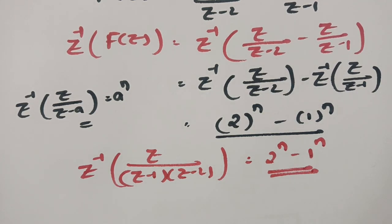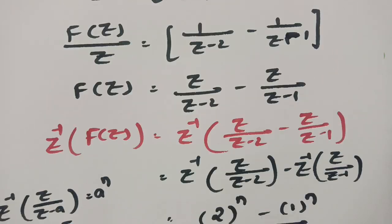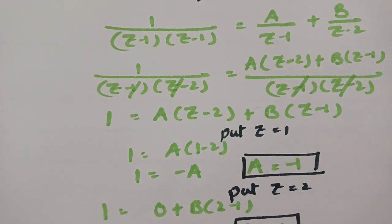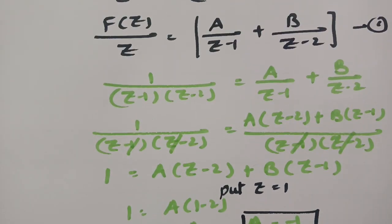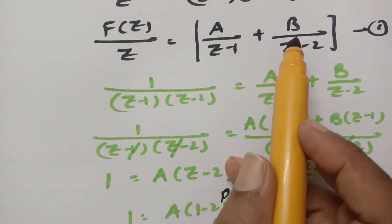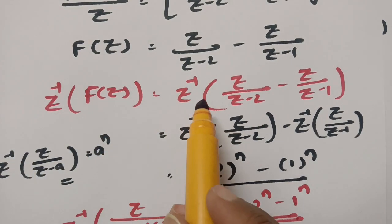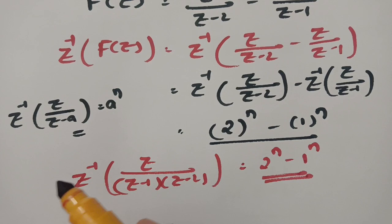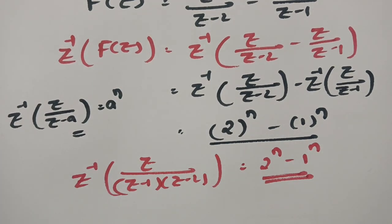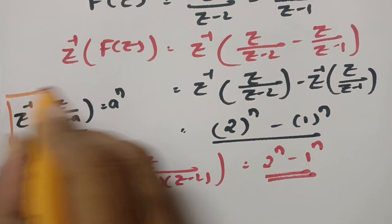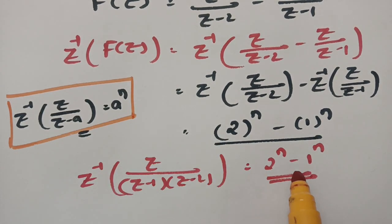This is how we solve inverse Z transforms using partial fractions. I have explained how to resolve into partial fractions, get A and B values, substitute in equation 1, apply Z inverse on both sides, and use the formula from the special functions of Z transforms to get the final result.